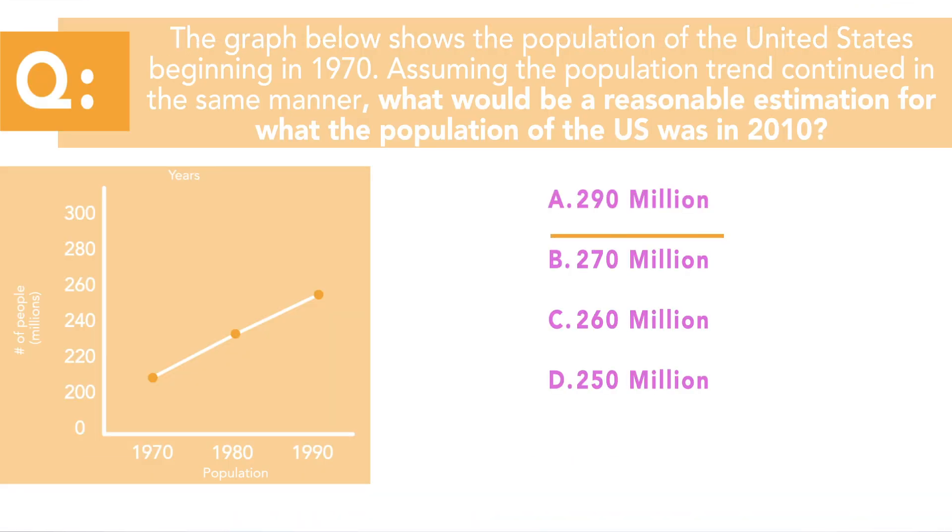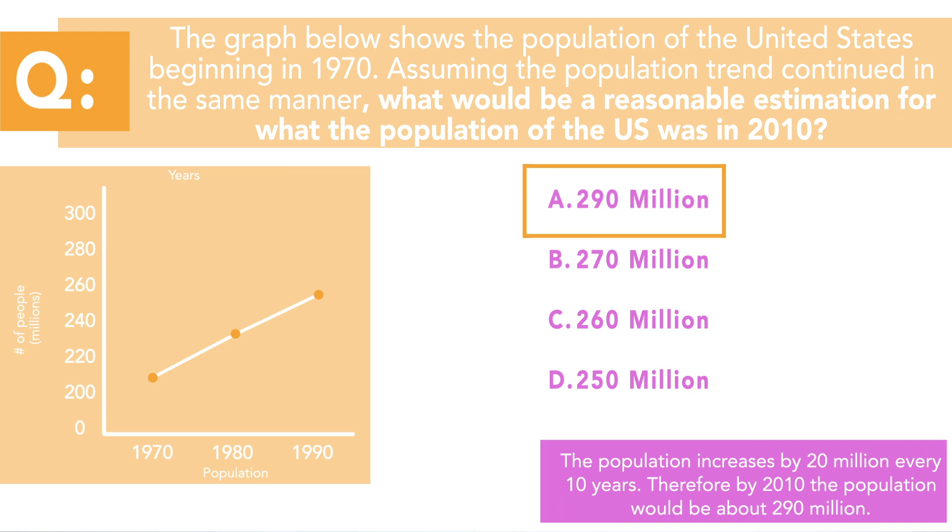The correct answer is going to be 290 million. The population increases about 20 million people per year, every 10 years. So if you look on the graph, the estimated population in 2010 would be 290 million. All right, let's look at the fourth question today.